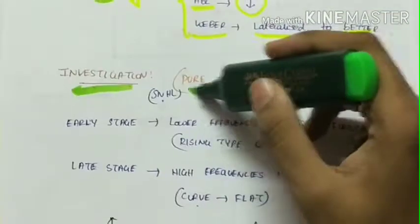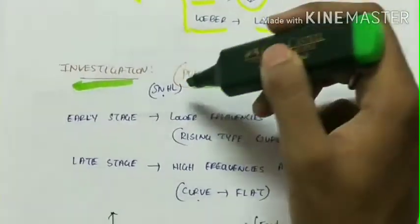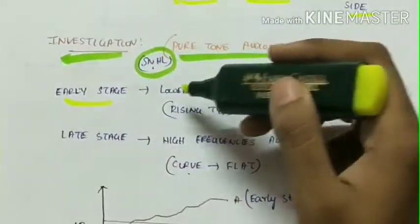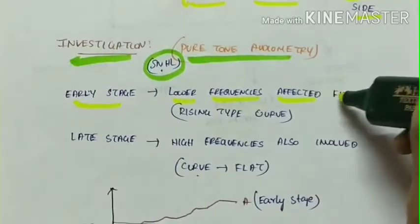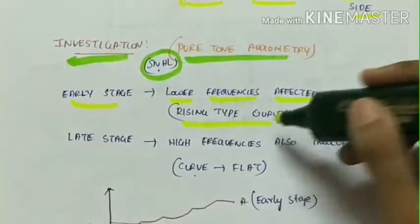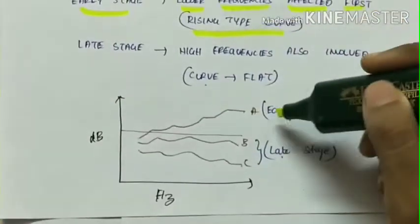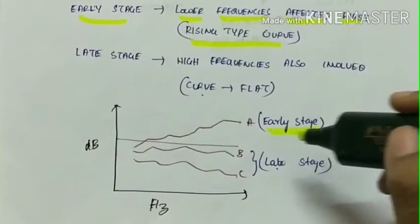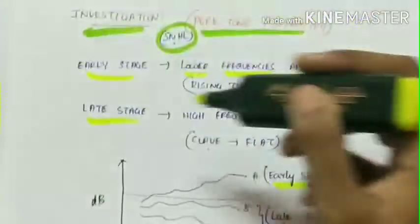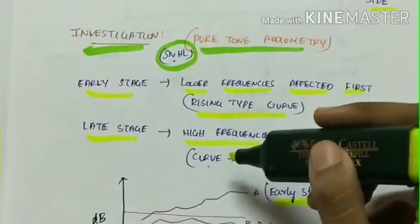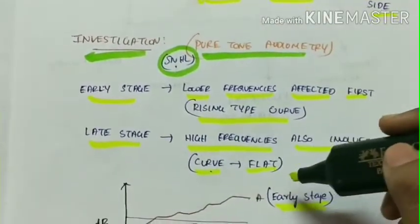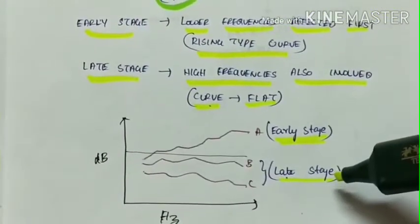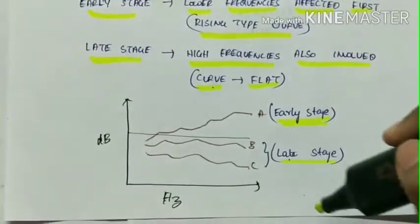Coming to the investigation, pure tone audiometry is performed for the detection of sensorineural hearing loss. In the early stages lower frequencies are affected first, so we can see a rising type of curve. This is the curve A which is seen in early stages of sensorineural hearing loss. Whereas in late stages high frequencies are also affected. Therefore the curve becomes flat or sometimes it can even descend down. So B and C are the curves of late stages which are either flat or descend down.